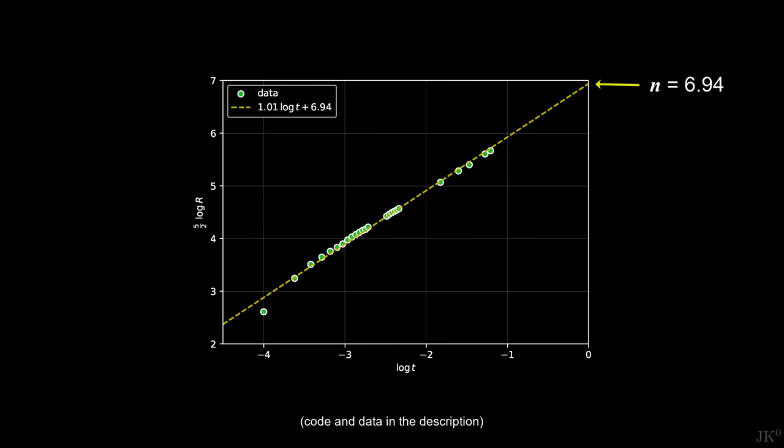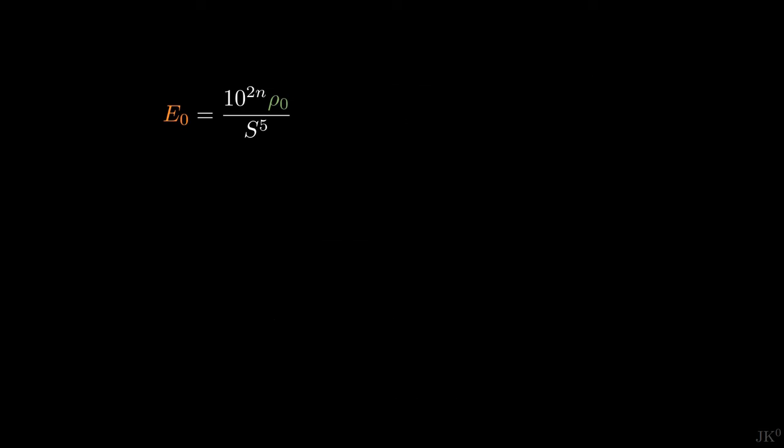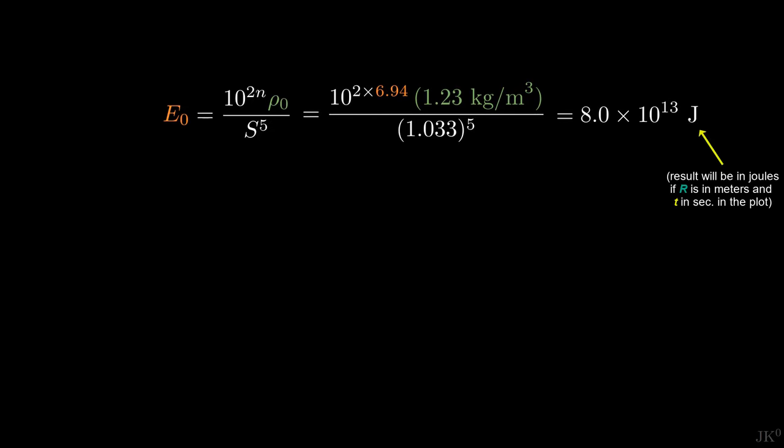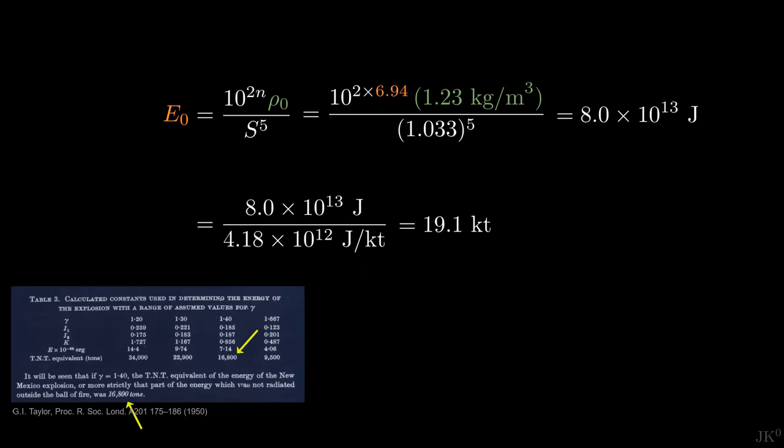Taylor continued, and from the plot he determined the intercept to be 6.94. Plugging this value in the formula for the blast energy, we get that E0 is equal to 80 terajoules. Converting this energy into TNT equivalent, he obtained 19.1 kilotons of TNT. Taylor reports a value slightly lower, but if you follow his calculation you will spot a few typos that explain the difference. This is how G.I. Taylor determined the blast energy of the first nuclear explosion.